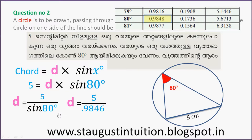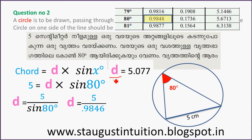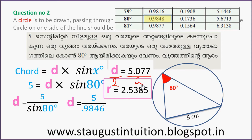D is equal to 5 divided by sin 80. D is equal to 5.077. Now, R is equal to D divided by 2, so R is equal to 2.5385.